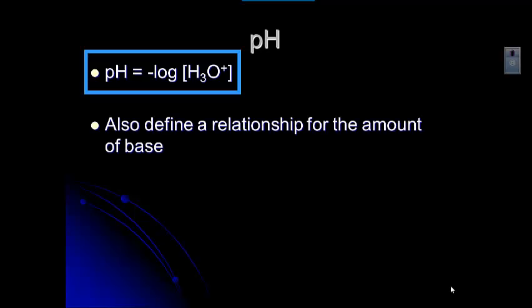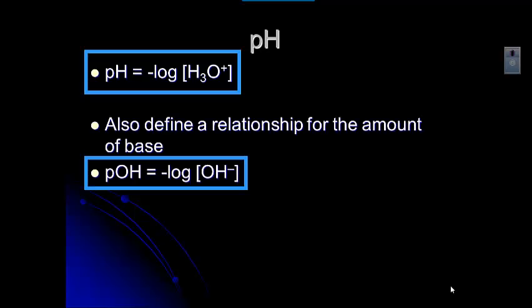We also have to define a relationship for the amount of base, and we use something called pOH, and that's equal to the negative log of the hydroxide ion concentration. Then we have to be able to reverse a log. If we have a pH or a pOH, we need to be able to figure out those concentrations.